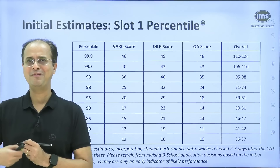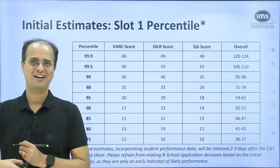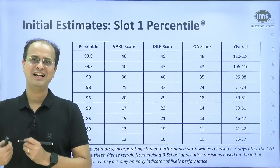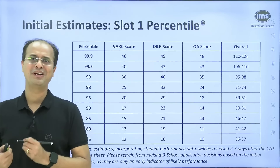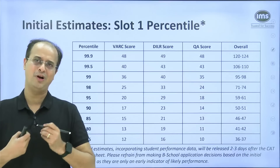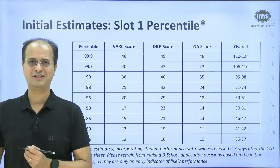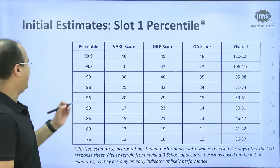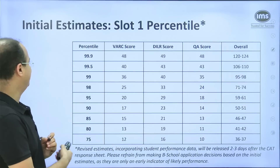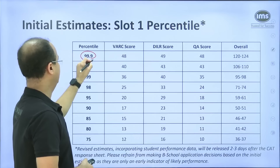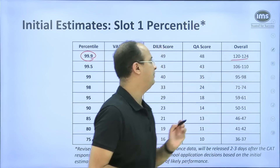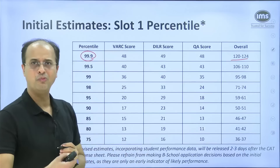A lot of people may not like our analysis because our cutoff prediction is going to be on the higher side. But we have looked at the data for all our SimCats, and the data for CAD21, 22 and 23 to come up with these estimates. We feel for CAD24, to fetch a 99.9 percentile, you will need a score of somewhere close to 120 to 124.